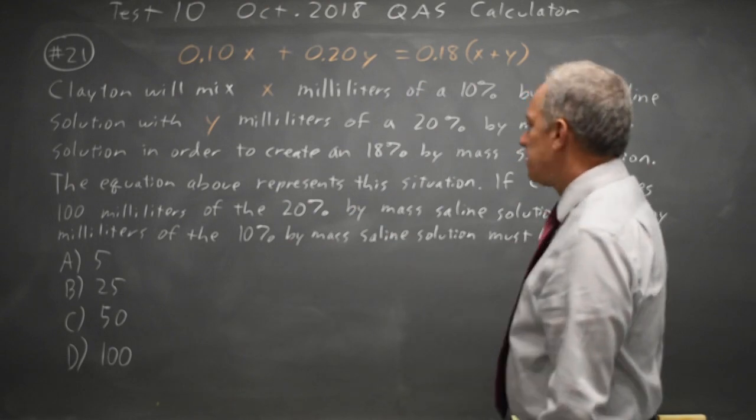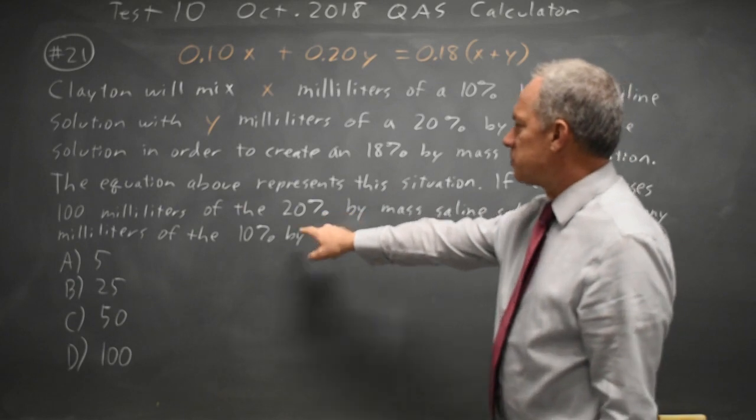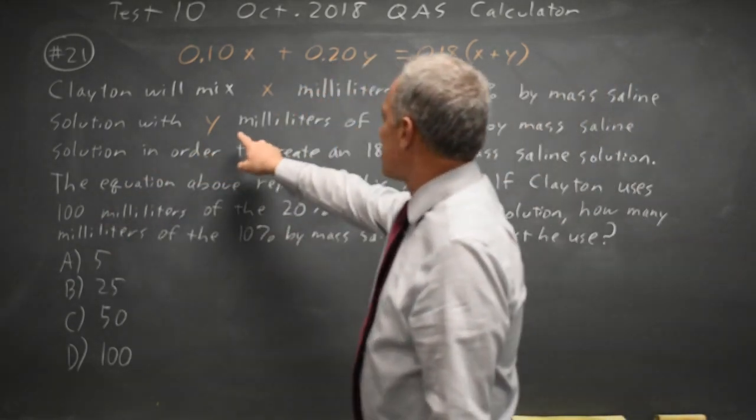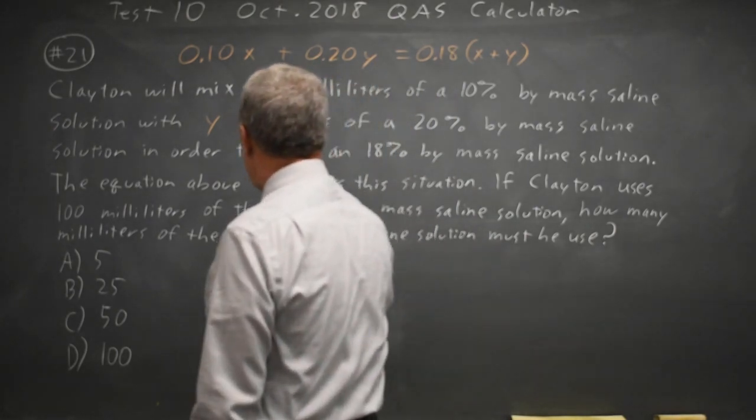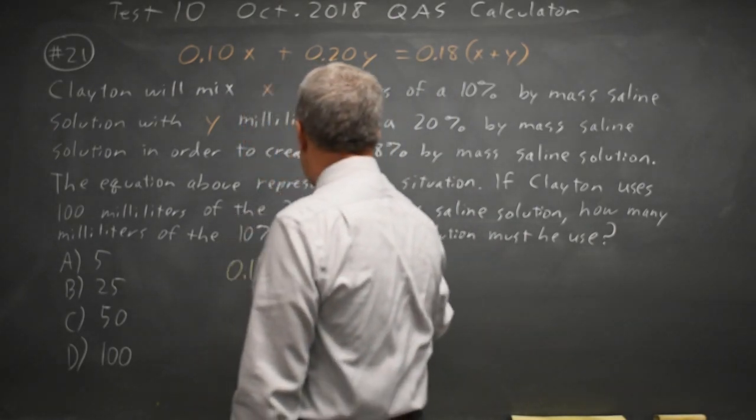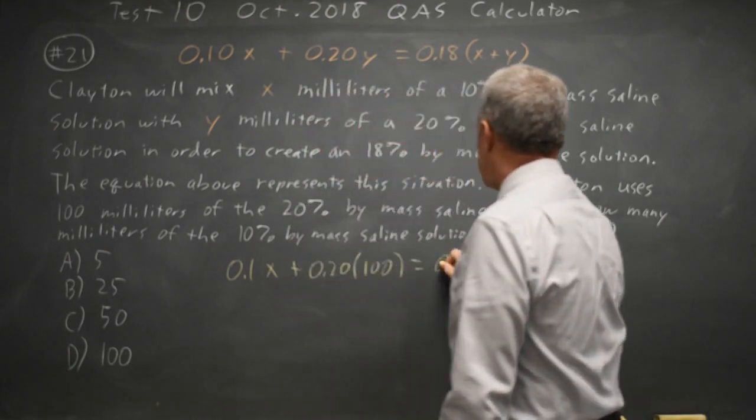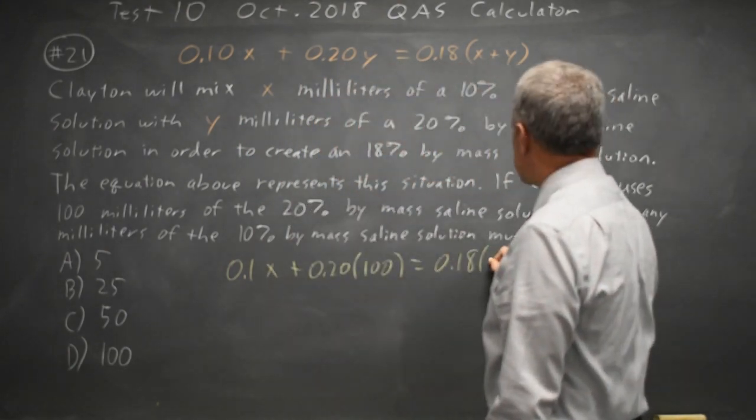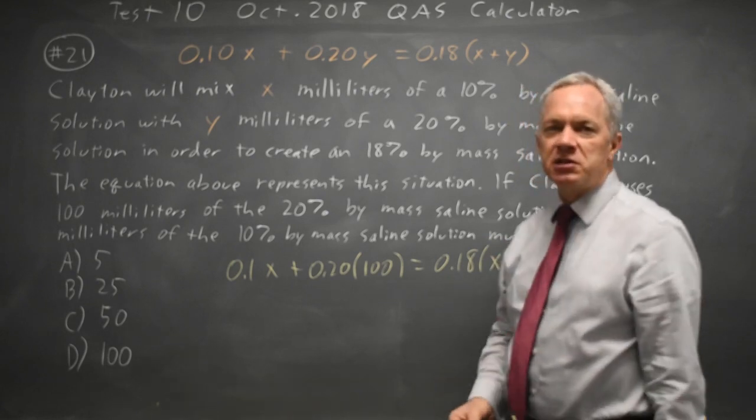In this case we're given the amount of 20% solution is 100 milliliters and that amount is y, so that gives you the equation .1x + .20(100) = .18(x + 100), and we can solve this algebraically, but if you have the graphing calculator you can put the left side into y1...